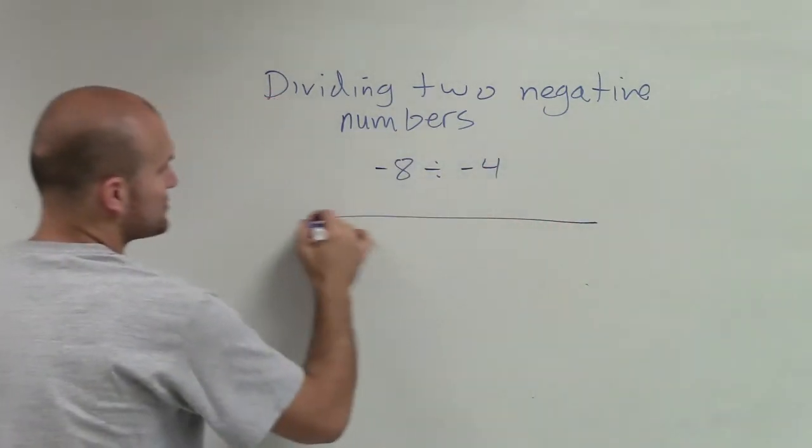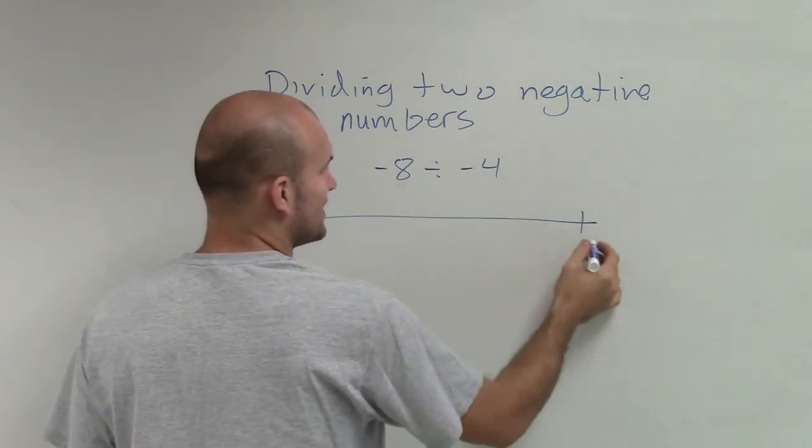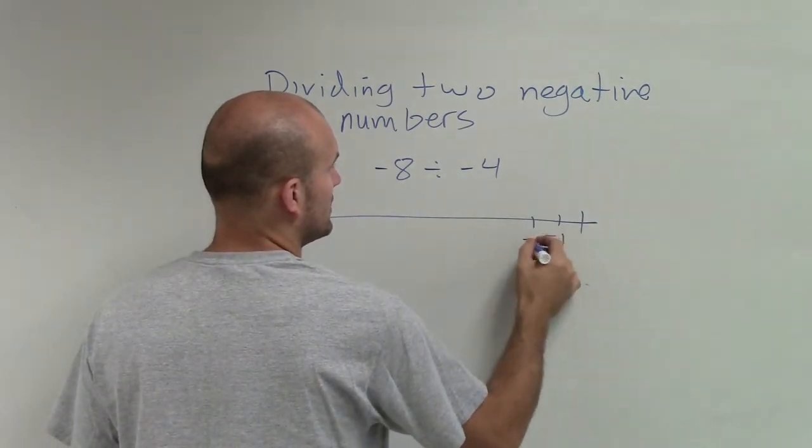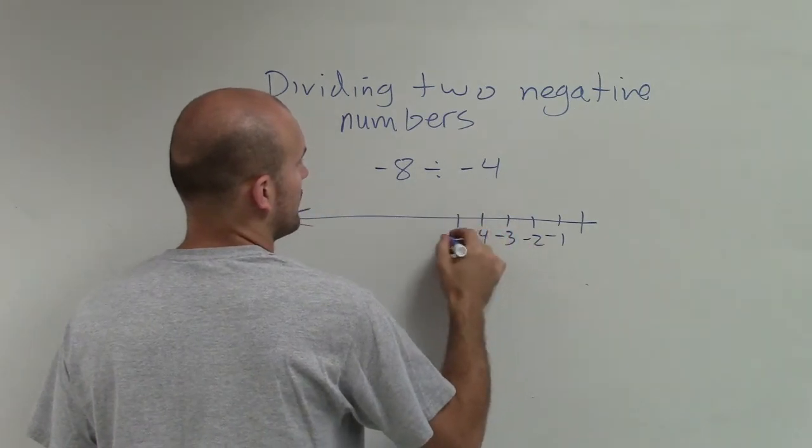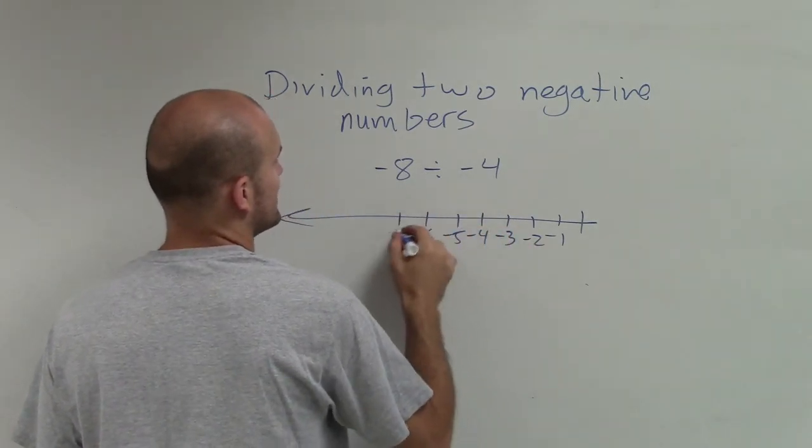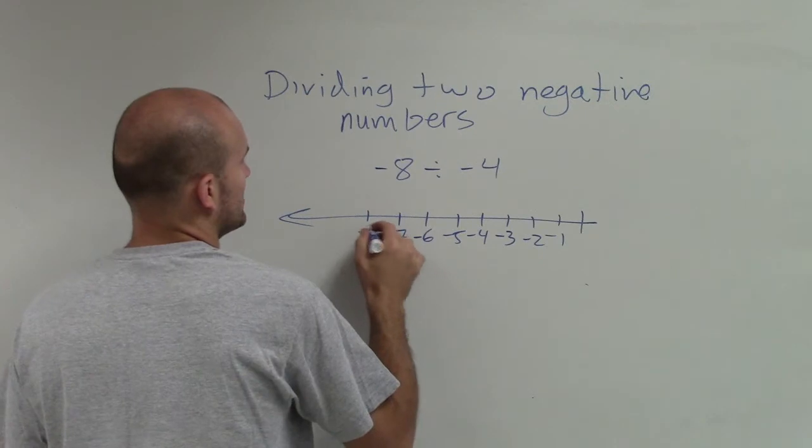So what I can do is use my number line again, and I'll go down to negative 8. So I have negative 1, negative 2, negative 3, negative 4, negative 5, negative 6, negative 7, negative 8.